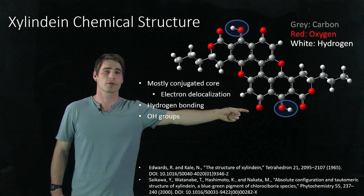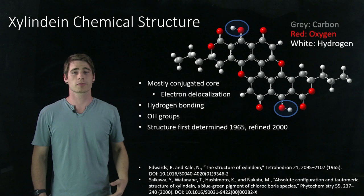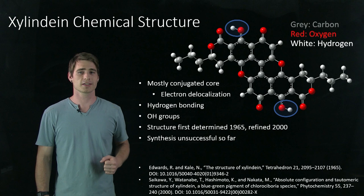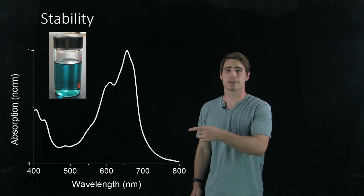We've also got these OH groups on the side of this molecule that allow for hydrogen bonding, which also affect its optoelectronic properties. This structure was first determined in 1965, although nothing was really done with it since then. The structure was refined in 2000, and the synthesis was unsuccessful so far, and its optoelectronic properties are largely unknown. So we've taken a look at some of the optical and electronic properties.